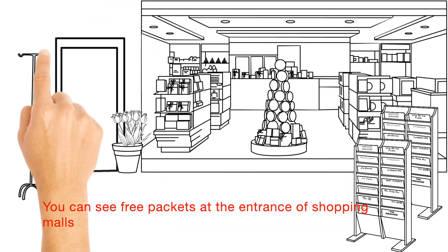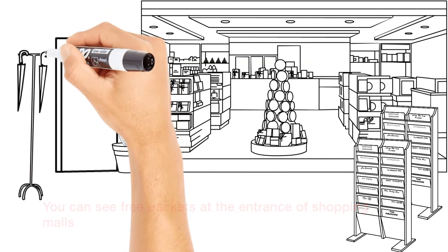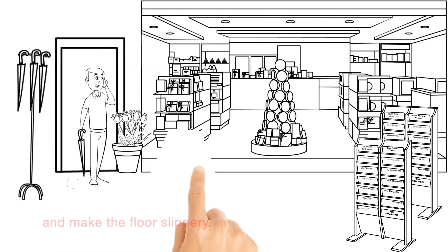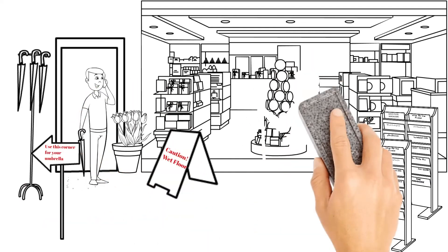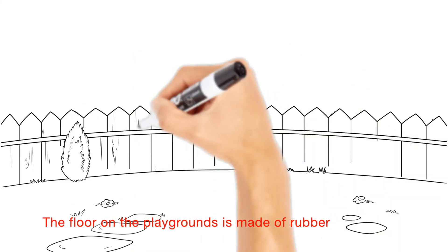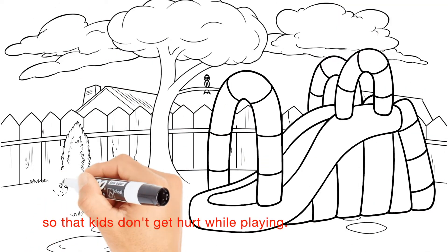You can see free packets at the entrance of shopping malls on a rainy day so that you don't enter the mall with a dripping umbrella and make the floor slippery. The floor on the playgrounds is made of rubber so that kids don't get hurt while playing.